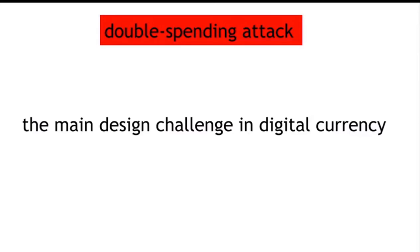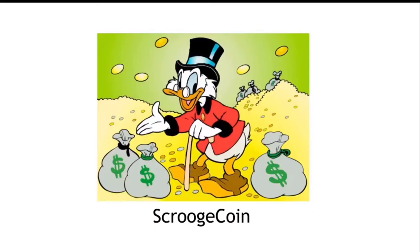In order to build a workable cryptocurrency we need a solution to the double spending problem, which is the main design challenge in designing a cryptocurrency. We need to improve on Goofy coin, and we'll do that by designing another coin called Scrooge coin. Scrooge coin is going to be rather like Goofy coin except it will solve the double spending problem in a particular way.